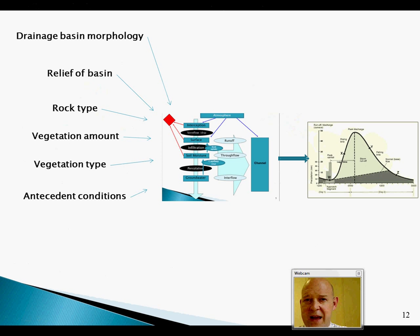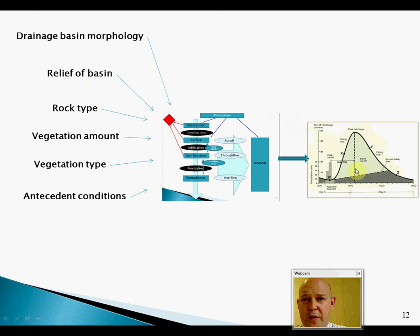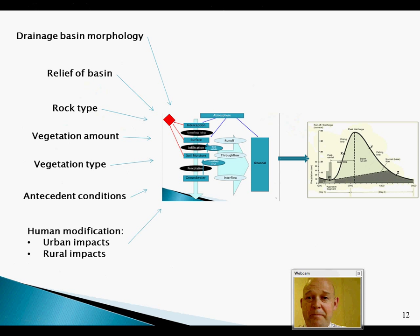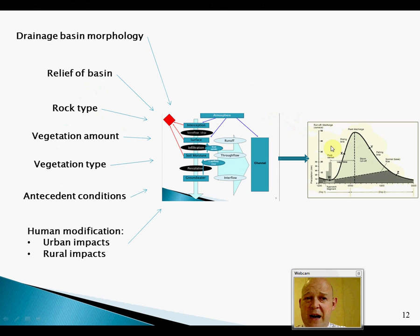Antecedent conditions — what was happening before — are critical. A long prior period of rainfall means saturation, high base flow, and any storm event is sitting on an already saturated system, creating a compound problem. This is the classic February scenario seen when news reporters stand outside pubs as people canoe down the street in Tewkesbury. Urbanization accelerates everything: impermeable surfaces, guttering, and drainage systems all accelerate runoff, producing a short lag time, steep ascending limb, and steep recessional limb.